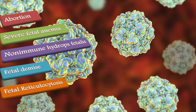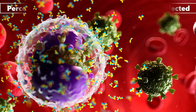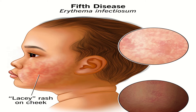Fetal reticulocytosis is a good prognostic sign, indicating that fetal hemoglobin has probably reached its nadir and spontaneous recovery is likely to occur. The annual seroconversion rate among susceptible primary school employees is 5.2 percent, compared with 2.4 percent in hospital staff. One percent of susceptible adults are infected each year.